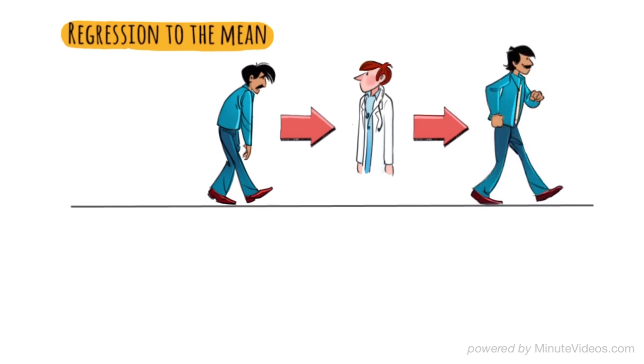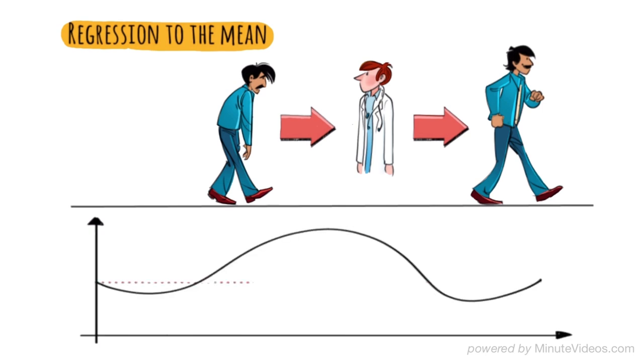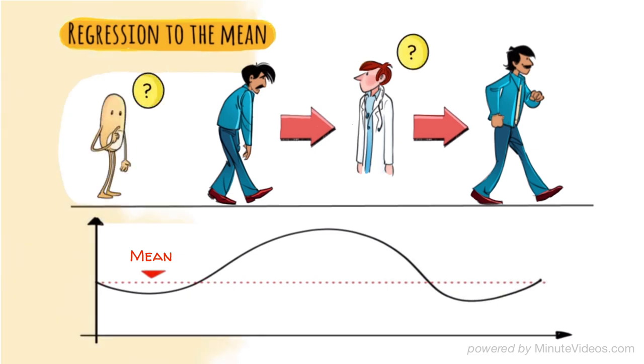If we look at the natural course of many illnesses, we understand that pain over time comes and goes in swings and usually regresses to the mean. We don't know if the doctor or placebo had anything to do with the improvement.